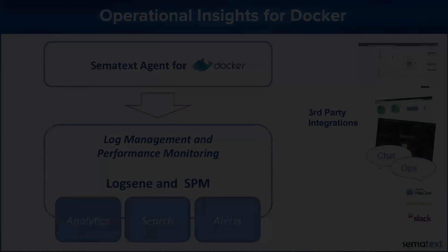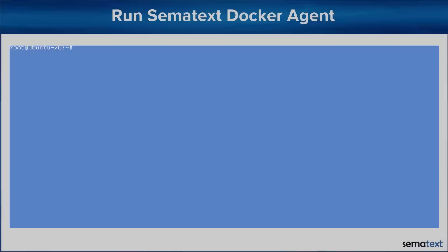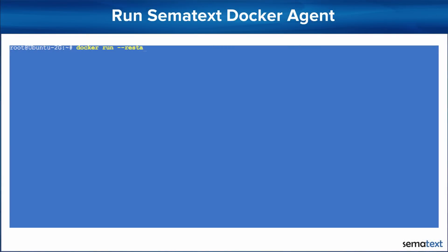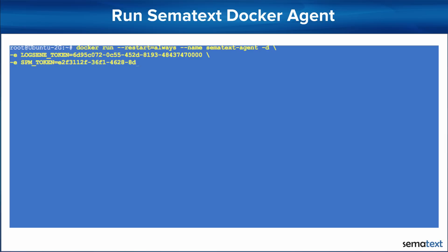First, let's see how to run this Docker agent. You run it by using your standard Docker run command, along with some additional parameters. Here we need to specify the Logzine application token, the optional SPM application token, the hostname, Docker socket, and the image name. And that's it!